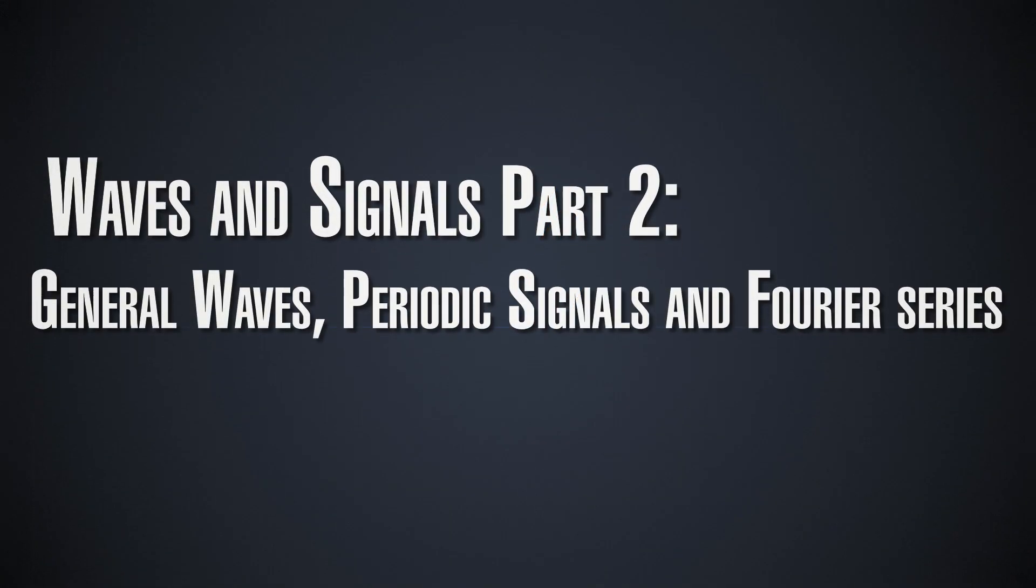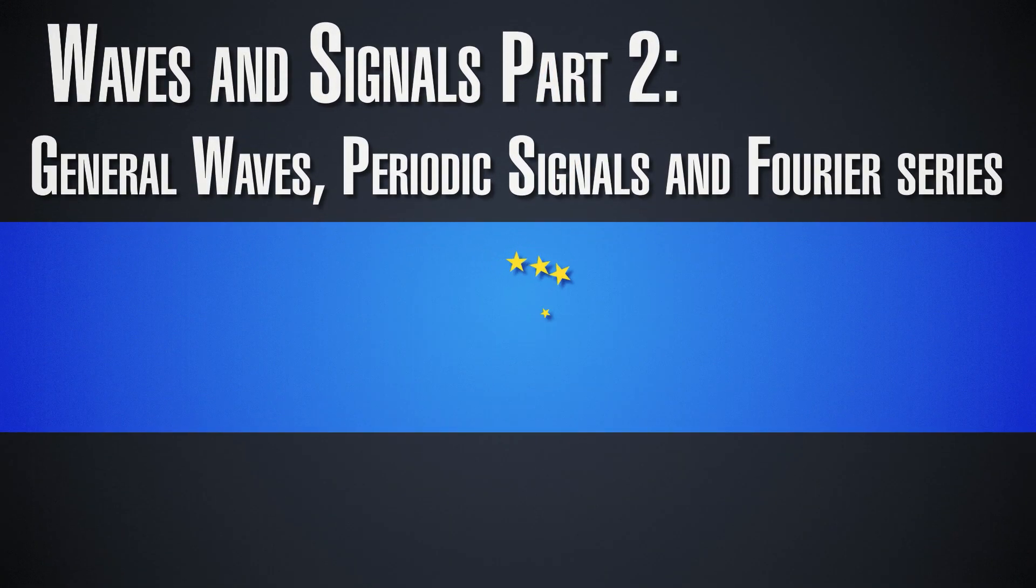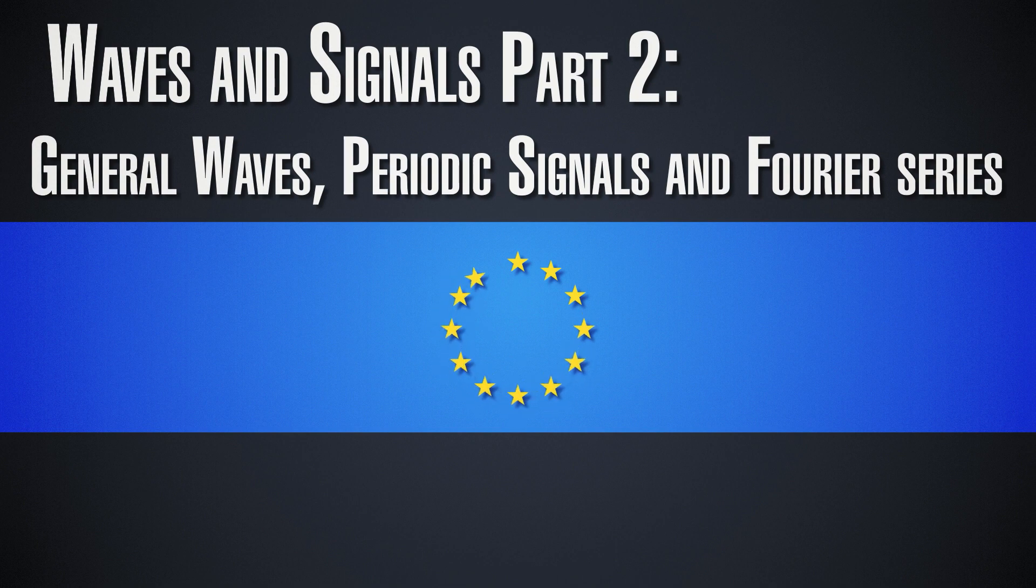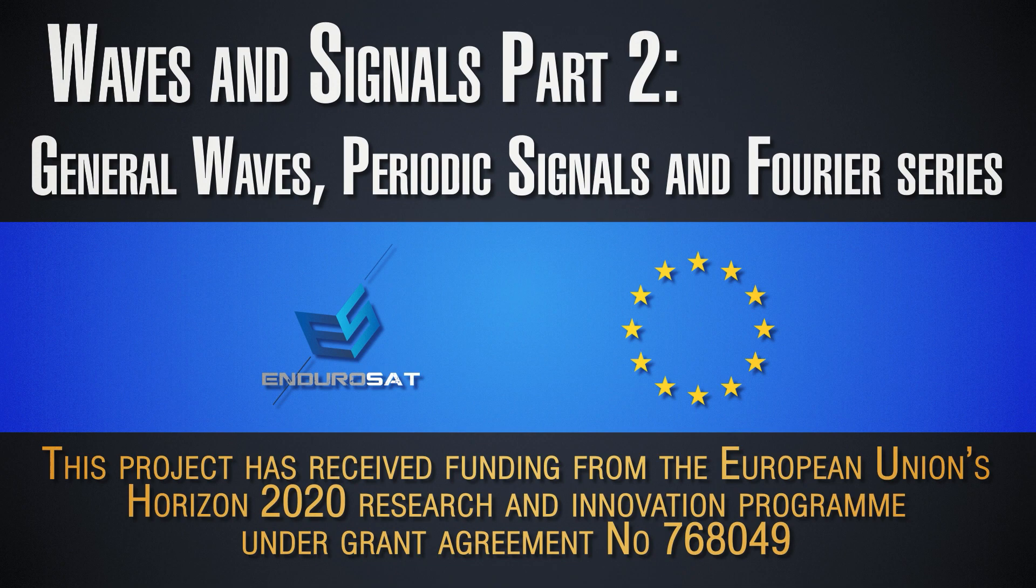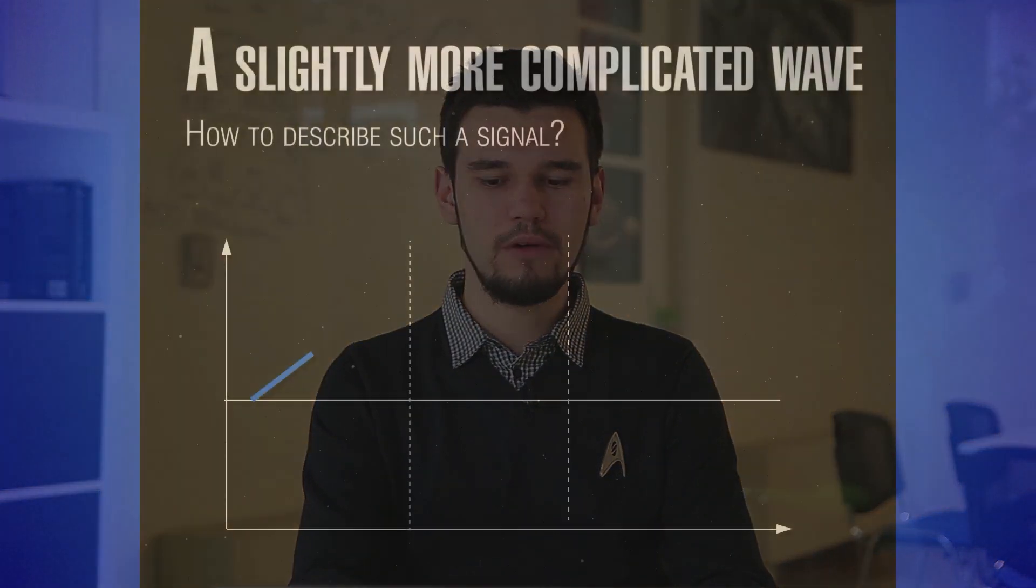So what if we consider a more general wave now? We saw how sinusoidal waves work, how you can take a sine function and turn its argument in such a way that it has the time period and wavelength you desire. But the sine function is a very simple function, the simplest periodic function we know from high school, but it is not the only possible wave.